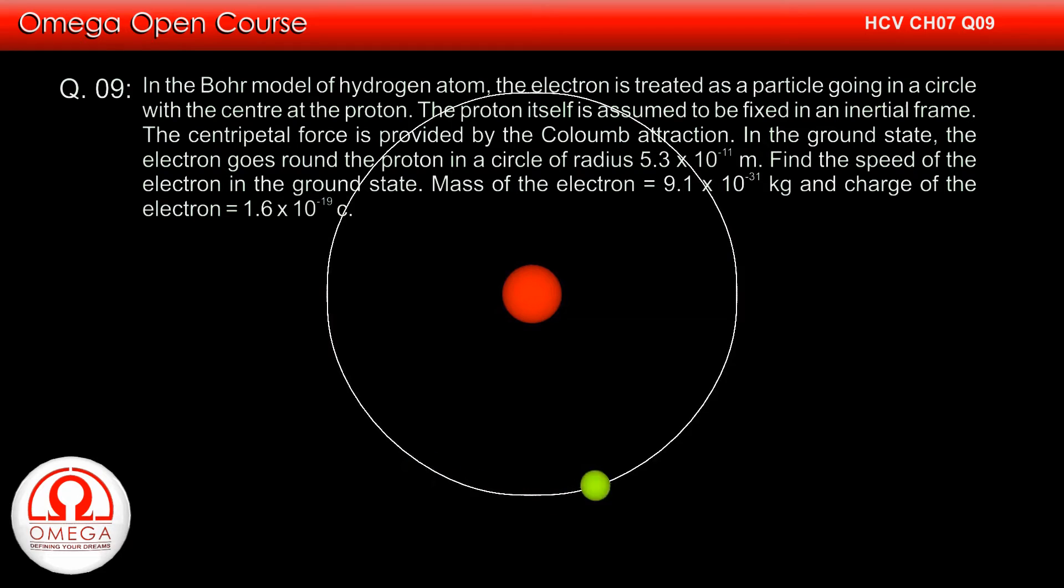In the ground state, the electron goes around the proton in a circle of radius 5.3 × 10⁻¹¹ meters. Find the speed of the electron in the ground state.